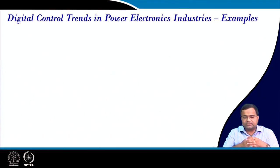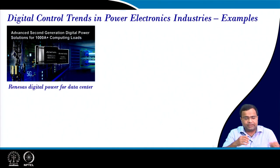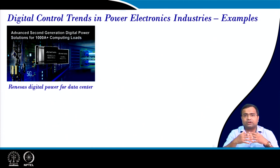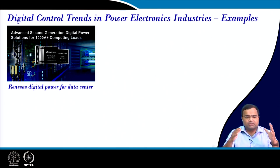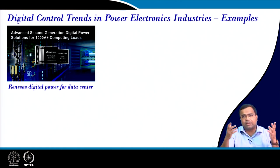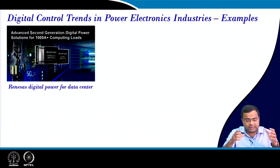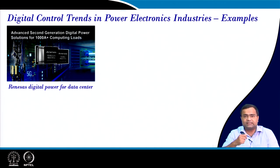Digital control trends in power electronics industry — some examples I am showing. One is for low voltage high current application, particularly for cloud server. In the age of internet and cloud computing, the cloud server power supply requirement can be 1.8 volt or below, but the current can be hundreds of amperes, even beyond 1000 amperes. For such application, digital control plays a significant role. I am showing the Renaissance digital power product for data center application.